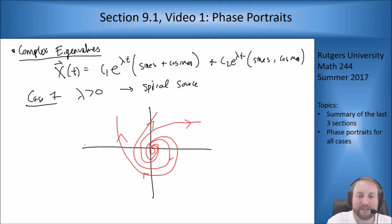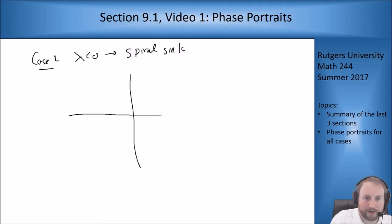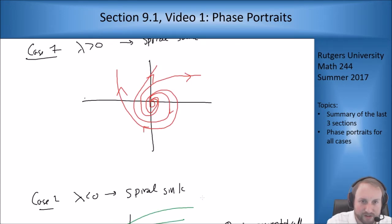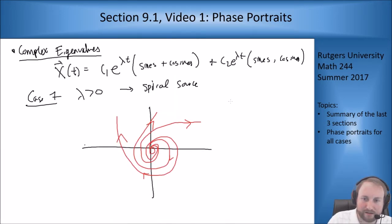Case two is lambda negative and that gives me my spiral sink. This looks similar to the opposite. Now everything is spiraling into the center. If you analyze this, this one here, zero is asymptotically stable because everything flows in towards zero as time goes on. If I go back up to my source, zero is unstable. If I'm nearby but I'm not at zero, I eventually spiral my way away from zero. So it's unstable.